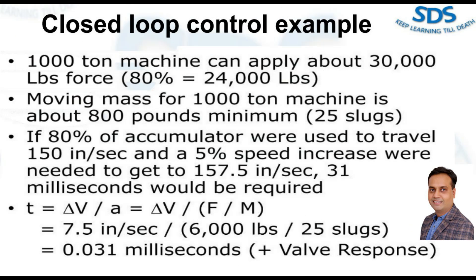Let's discuss the specific example of a closed-loop control in high-pressure die casting and how it's related to the Houghton machine. We focus on the Houghton machine for approximately 13,000 pounds of force, which is 80% of its maximum capacity, equivalent to 24,000 pounds. The moving mass for this machine is around 800 pounds, or 25 slugs.